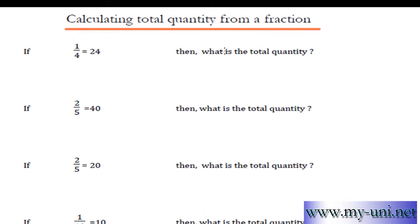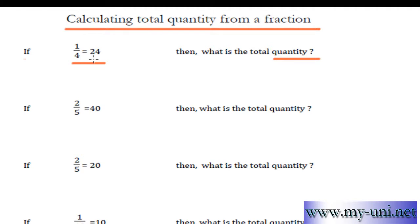Calculating total quantity from a fraction. If one-fourth is 24, then what is the total quantity? What they're simply saying is that one-fourth of a certain number or a certain quantity is 24. And if one-fourth is 24, then what is the whole quantity? What is the total number?